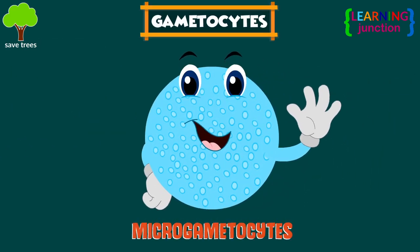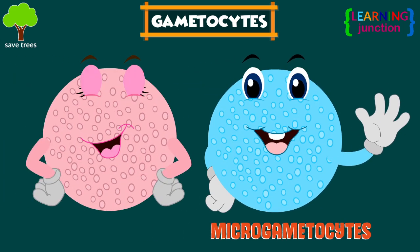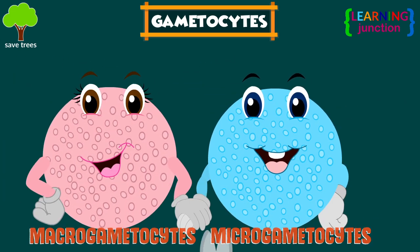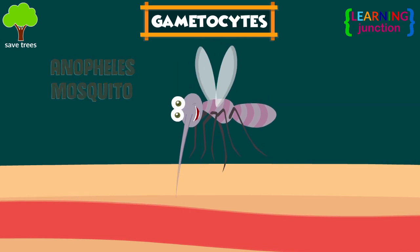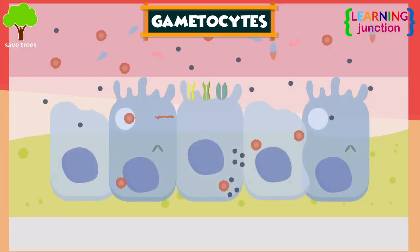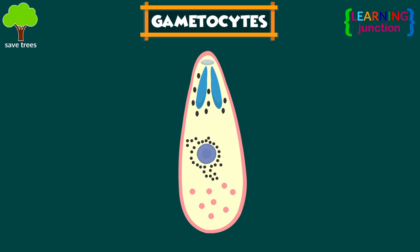Stage 1 — Gametocytes. The male gametocytes, known as microgametocytes, and female gametocytes, called macrogametocytes, are transmitted through an Anopheles mosquito during a blood meal. The male and female gametocytes mate inside the gut of the mosquito, and after 15 to 18 days they form a parasite called a sporozoite.